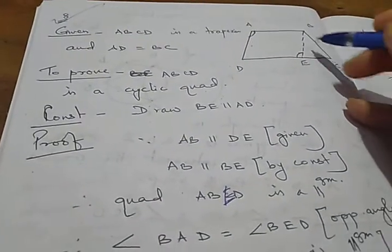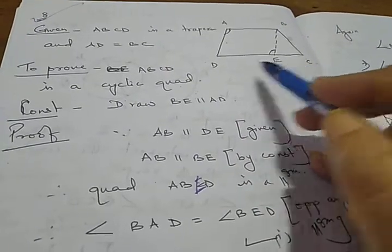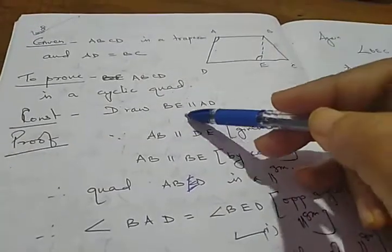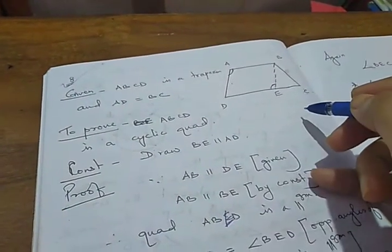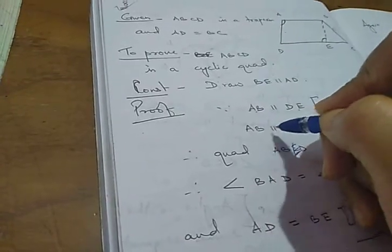For that, we do a construction: we draw a line BE parallel to AD. Since AB is parallel to DC and BE is parallel to AD, quadrilateral ABED is a parallelogram.